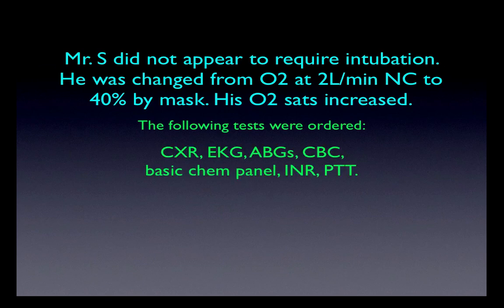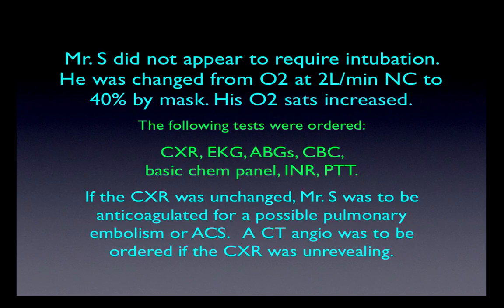The following tests were ordered: stat chest x-ray, EKG, ABG, CBC, basic chem panel, and in case he needed anticoagulation, a baseline INR and PTT. The plan was that if his chest x-ray was unchanged, there would be a strong suspicion for a possible pulmonary embolism or acute coronary syndrome, and he would then require anticoagulation. If the chest x-ray was severely different, a CT angio might not be required. But if his chest x-ray was unchanged and there was no other radiographic explanation, a CT angio was to be ordered, and the presumptive diagnosis of pulmonary embolism would be entertained.